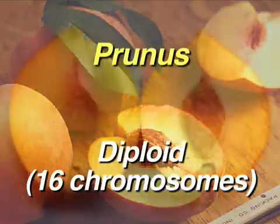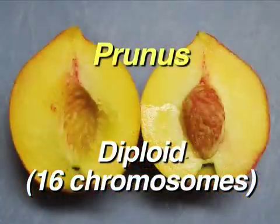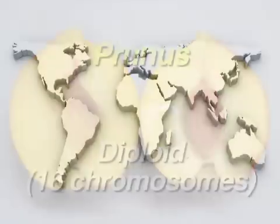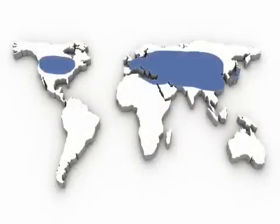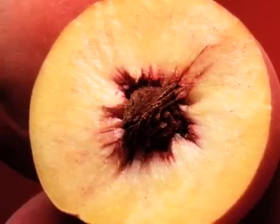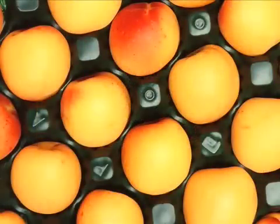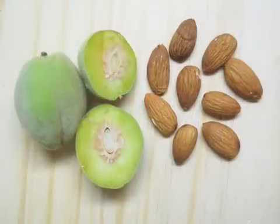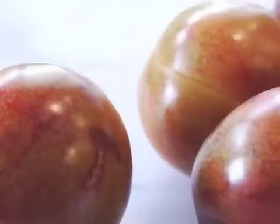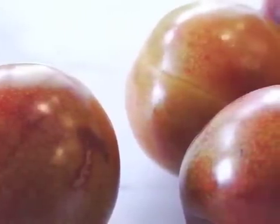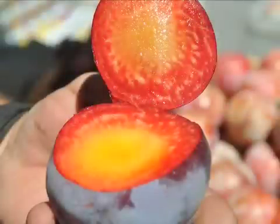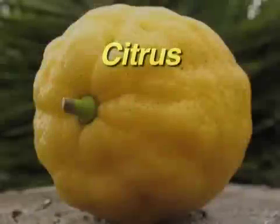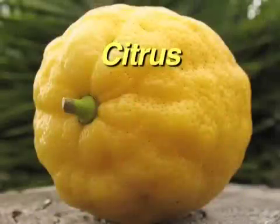Stone fruits are in the genus Prunus, which is also in the rose family. They are mostly diploid with eight pairs of chromosomes, but some can be tetraploid or hexaploid. Prunus species are found in Asia, Europe, the Middle East, and even the Americas. They include peaches and nectarines, apricots, plums, cherries, and almonds, which are eaten as seeds. Many stone fruit species with the same number of chromosomes can cross with each other. The pluot and plumcot are examples of a cross between plums and apricots.